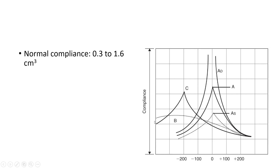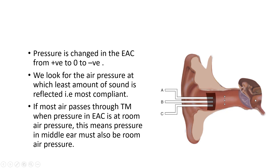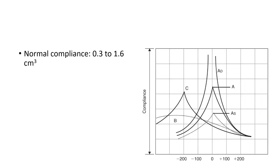We have the C type curve. At positive pressure, most of the sound is reflected back — compliance is lowest. As we decrease the pressure, normally at zero pressure the compliance should be maximum. But in the C curve we do not see that. When we further continue to decrease the pressure we see an increase in compliance, meaning less sound is reflected. This happens because the pressure in the middle ear was negative. So we had to create negative pressure in the external canal as well. When the pressure on both sides becomes equal, most sound waves are passed. What creates negative pressure in the middle ear? The Eustachian tube helps maintain equal pressure between the middle ear and the surroundings, so if it is not functioning properly, we get a type C curve with a retracted tympanic membrane.